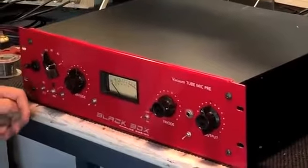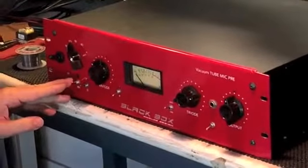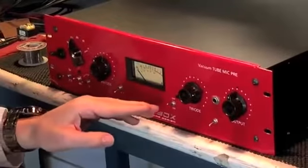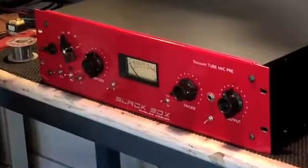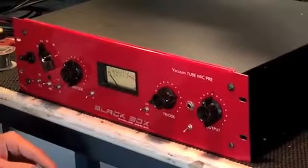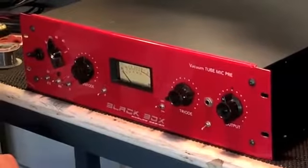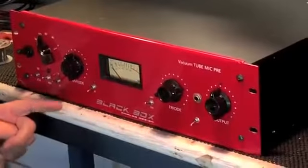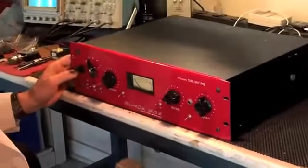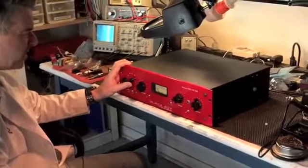This particular preamp, at least from looking at the faceplate, featured an impedance selection, a phantom power. Possibly the ability to turn the triode tube in and out. A DI selector. One of these is probably phase. And one of these is probably either an air boost or some kind of boost. We have a five position roll off selector.